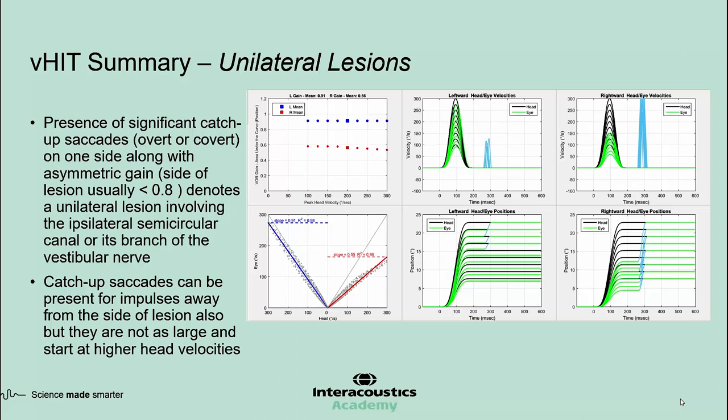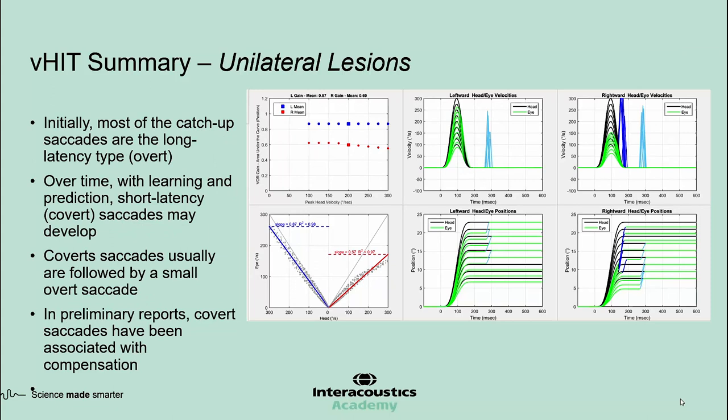The unilateral loss pattern is represented by the presence of significant catch-up saccades on one side along with asymmetric gain, usually less than 0.8 for that side. This indicates a unilateral lesion involving the ipsilateral semicircular canal or its branch of the vestibular nerve. Catch-up saccades may also be present for impulses away from the side of lesion but are not as large and usually start at higher head velocities. Initially, most catch-up saccades are long-latency overt saccades; over time with learning, short-latency or covert saccades may develop, and these have been associated with compensation in preliminary reports.